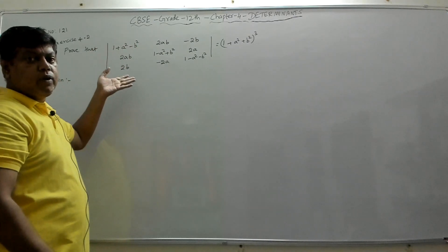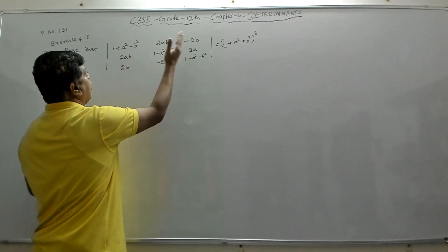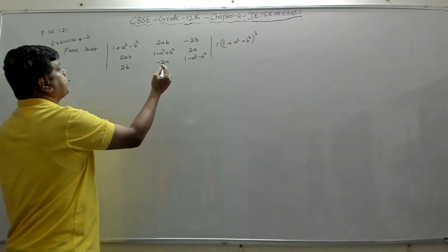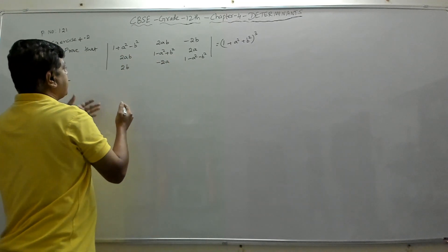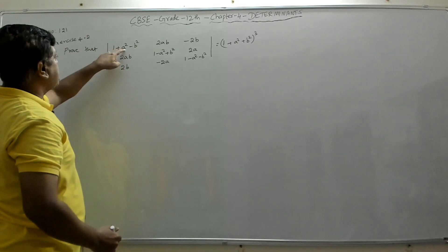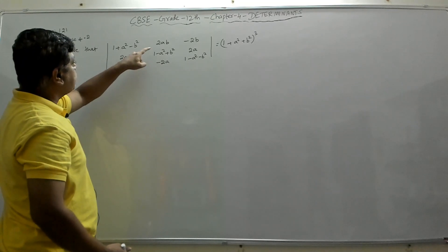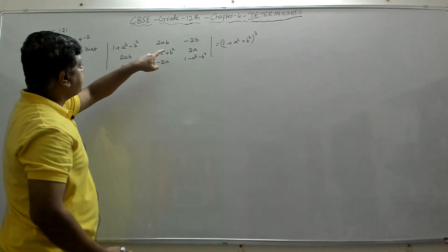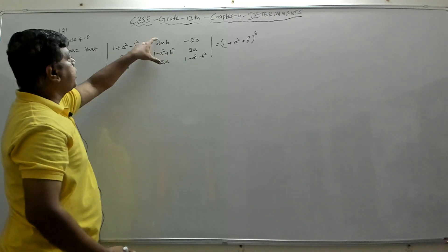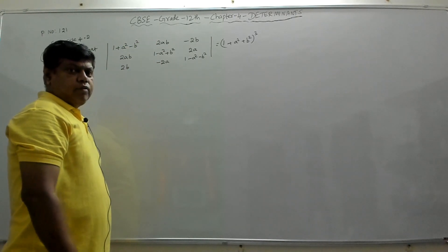If we add all three columns, we don't get the same element either. Adding all three gives 1 + a² - b² + 2ab, 2b; if you add all this you get -2ab + 1 - a² + b² - 2a. Here you have 2b, so they don't match.